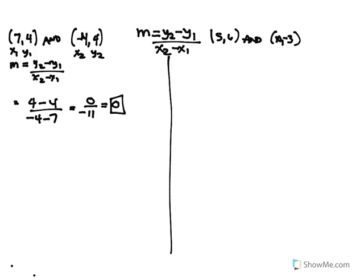So our slope here is zero. All it is is direct substitution and simplifying. Then we have our second ordered pairs, and we're going to do the same thing—we're substituting directly.